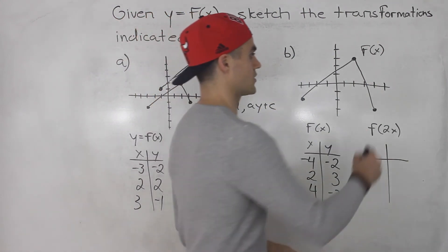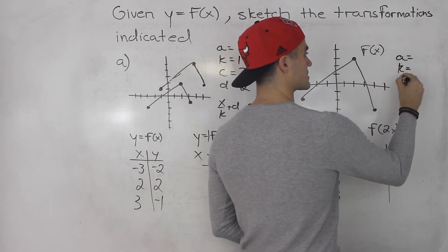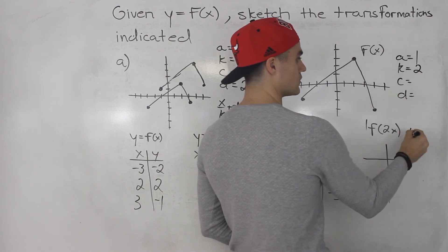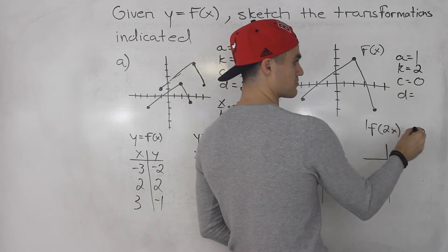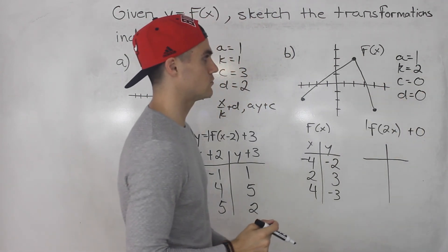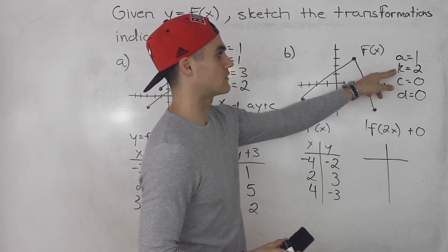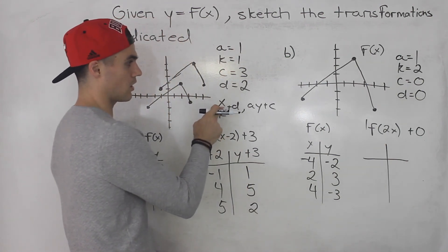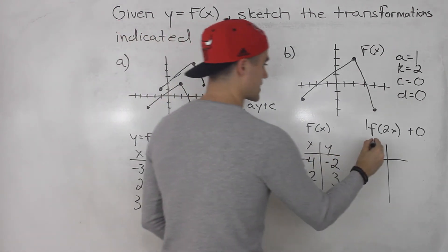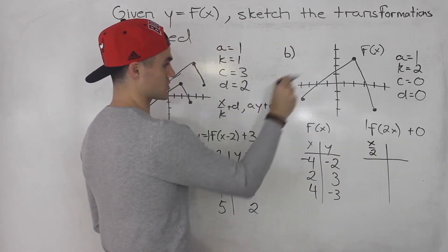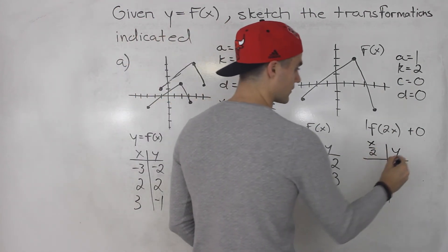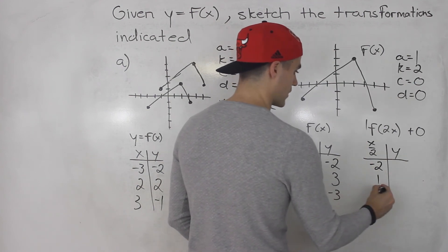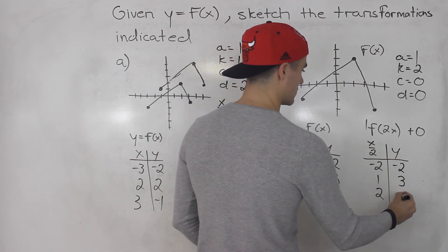Now we have to transform these points. With this function, the a value is one, the k value is two, the c value is zero, and the d value is zero — so it's not shifted left or right and not shifted up or down. The only transformation is a k value of two. Plugging into the formula, all we're doing is taking the x values and dividing them by two. So negative four divided by two gives us negative two, two divided by two is one, and four divided by two is positive two. All the y values stay the same.